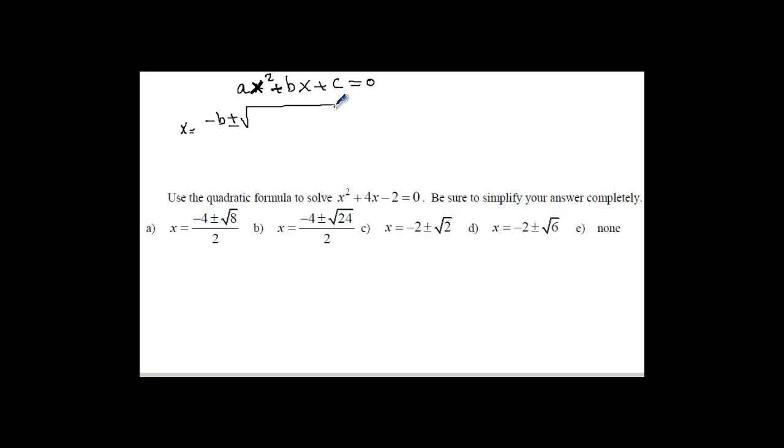Okay, so the formula would be x = -b ± √(b² - 4ac) / 2a. That's what you meant, right?